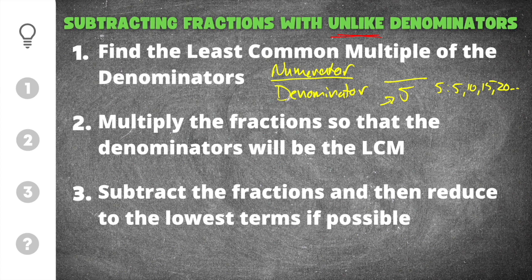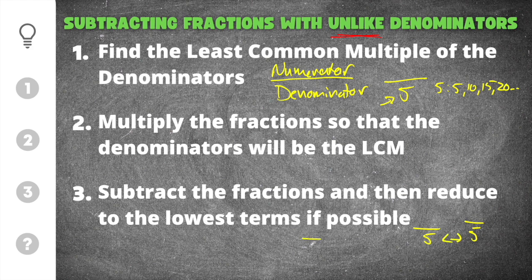The second step to subtracting fractions with unlike denominators is to multiply them so that both fractions have the least common multiple in the denominator. We're going to do three practice problems so you'll have plenty of examples. And finally, once they have the same denominator, you can subtract. The denominators have to be equal — if one is 2 and one is 5 you cannot subtract them. They have to be the same denominator, then you subtract and reduce if possible.